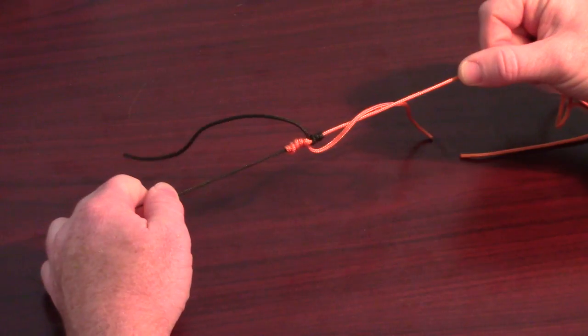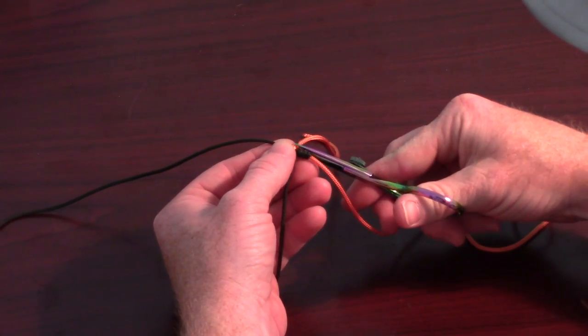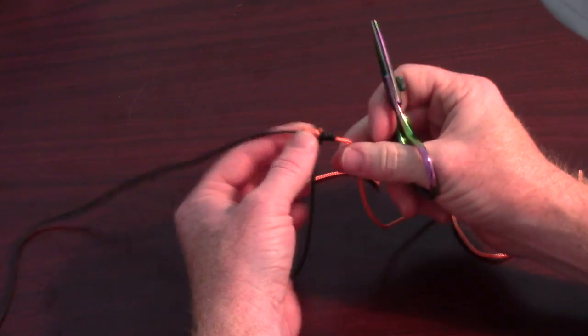The knot should come together with each tag end pointing out in opposite directions. Now you can clip the tag ends very close to the knot without worrying about it coming loose.